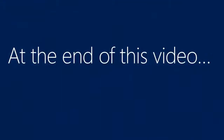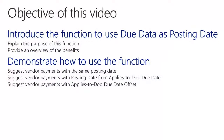At the end of this video, you will have an overview of the different options to instruct the bank when to execute payments to vendors. The objectives of this video is to introduce the function to create payment lines where the applies-to document number due date is used as posting date. I will do this by demonstrating three different scenarios.